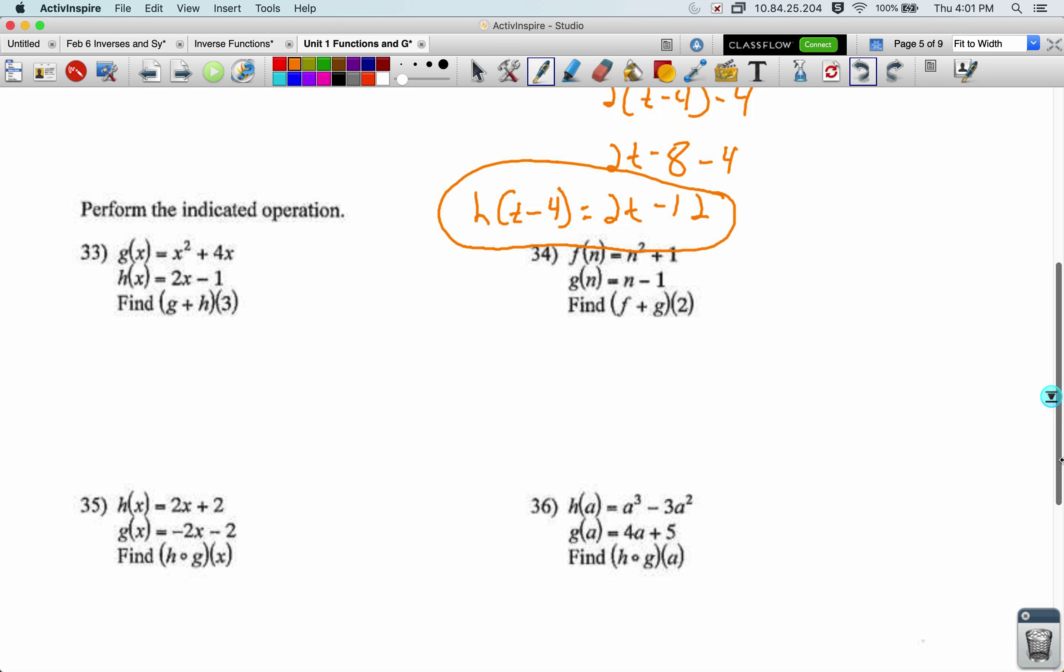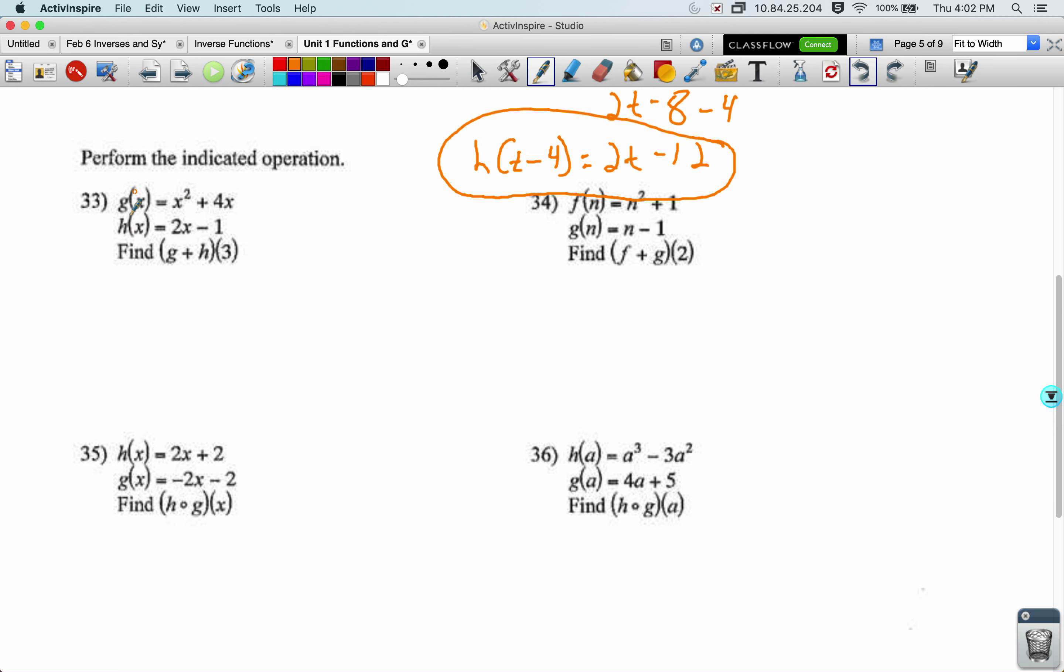Operations with functions. So I'll do 33. g plus h of 3. So what this means is do g of 3, do h of 3 separately, and add the results. So g of 3 would just be 3 squared plus 4 times 3. I'm plugging in the 3 there and there. Plus h of 3 would be 2 times 3 minus 1. So this becomes 9 plus 12 plus 6 minus 1. I'm just going to do that in my calculator. 9 plus 12 plus 6 minus 1 equals 26.